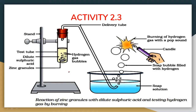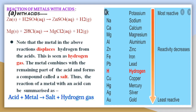Now let us see how the gases are formed in this reaction, and what is the chemistry behind activity 2.3. To understand the reaction and the chemistry, we first need to understand a basic concept of the reactivity series. The reactivity series is a list of metals aligned in decreasing order of reactivity — the metal at the top is the most reactive, whereas the metals at the bottom are the least reactive.